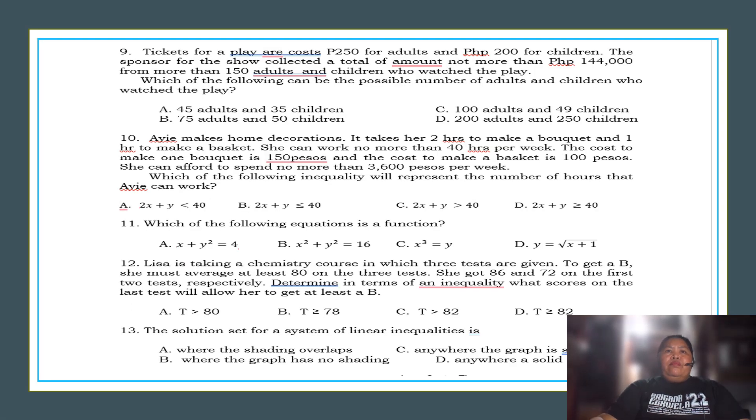For number nine, tickets for a play cost 250 for adults and 200 for children. The sponsor for the show collected a total amount not more than 144,000 from more than 150 adults and children who watched the play. Which of the following can be possible number of adults and children who watched the play? A, 45 adults and 35 children, B, 75 adults and 50 children, C, 100 adults and 49 children, or D, 200 adults and 250 children.